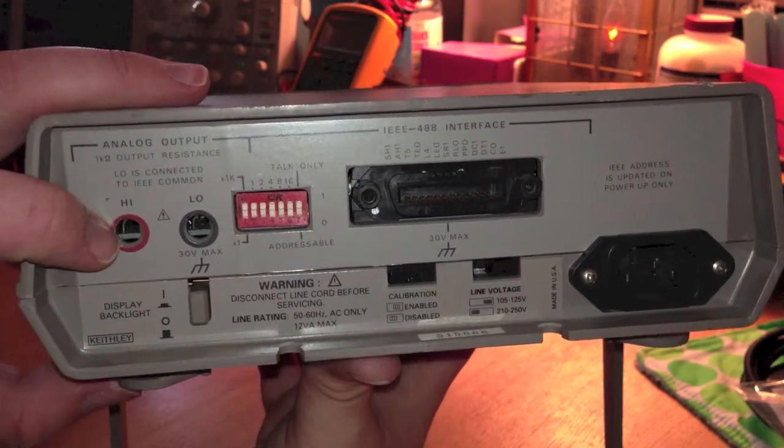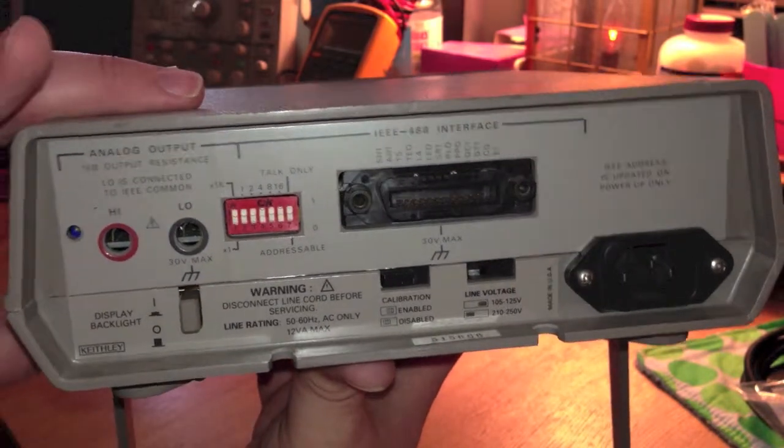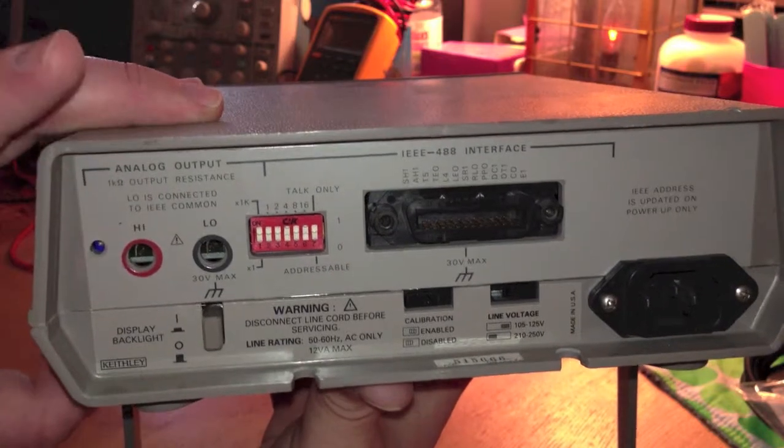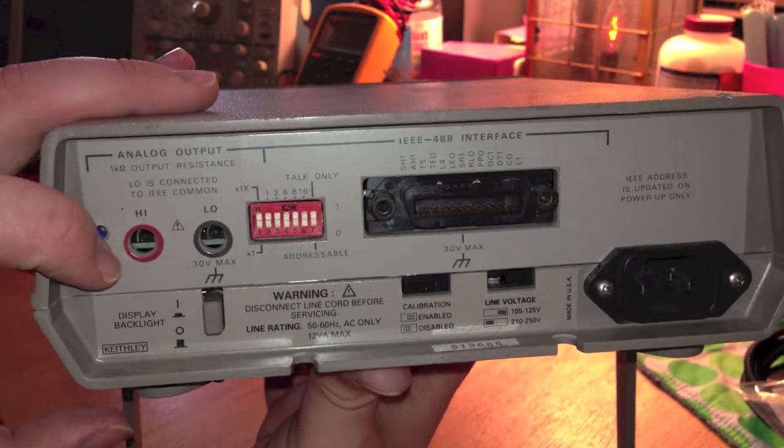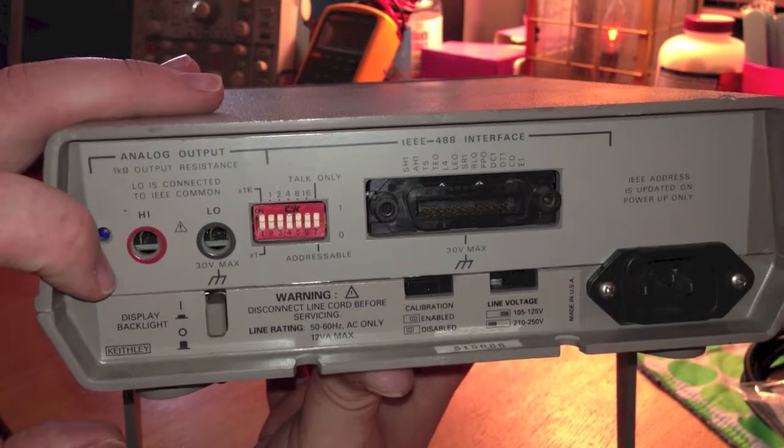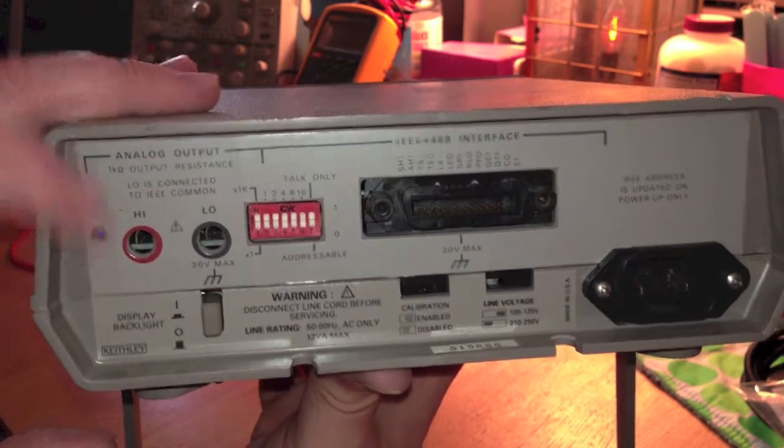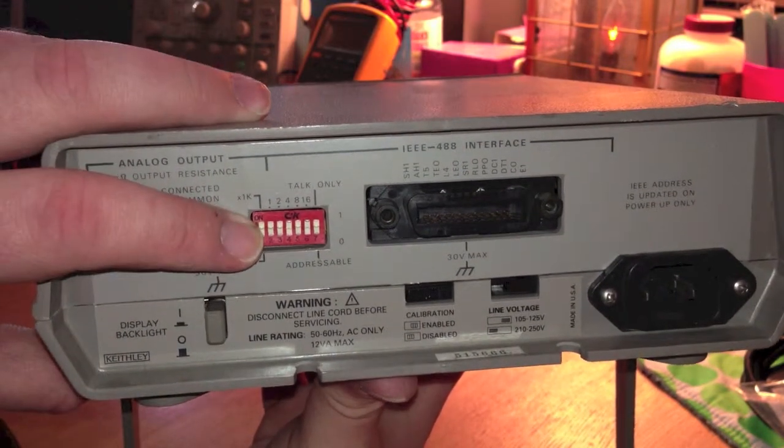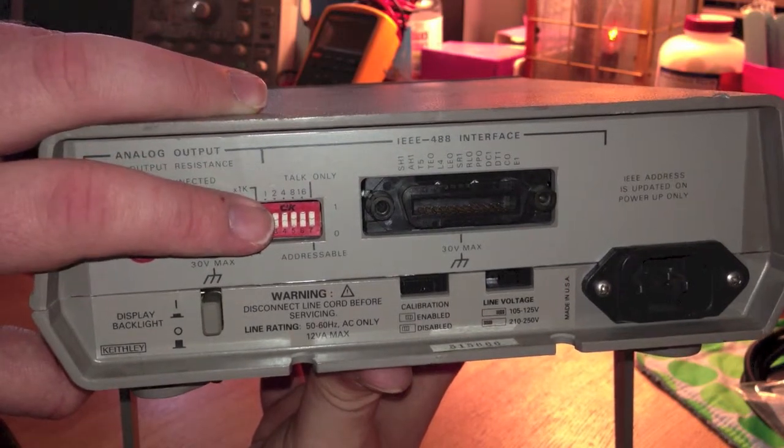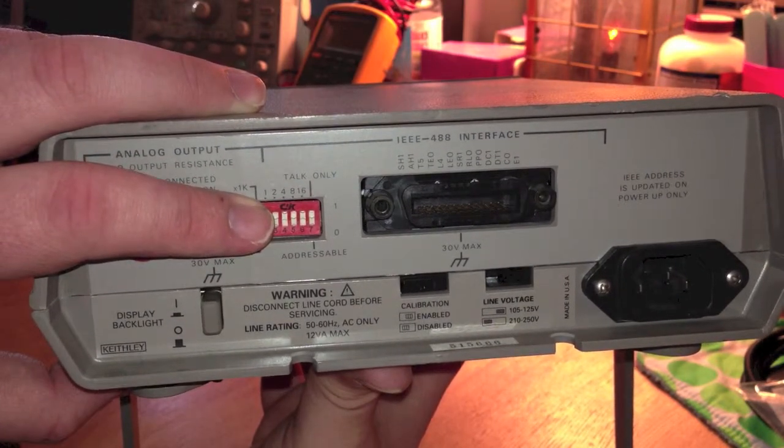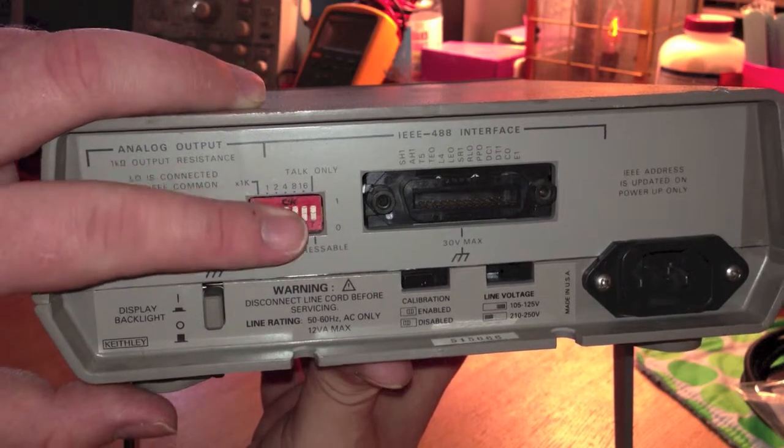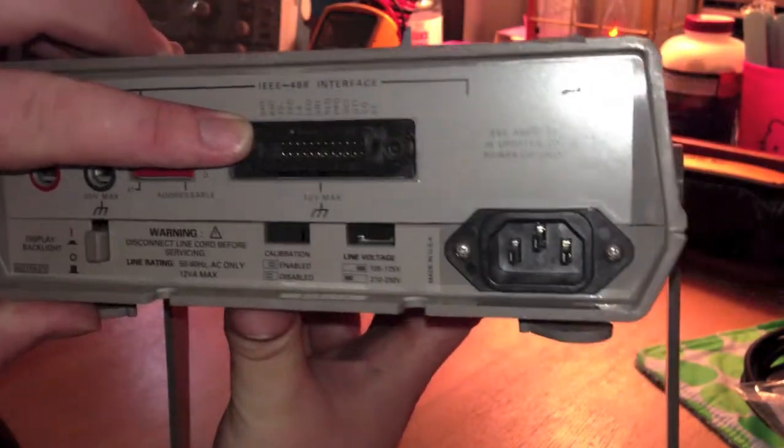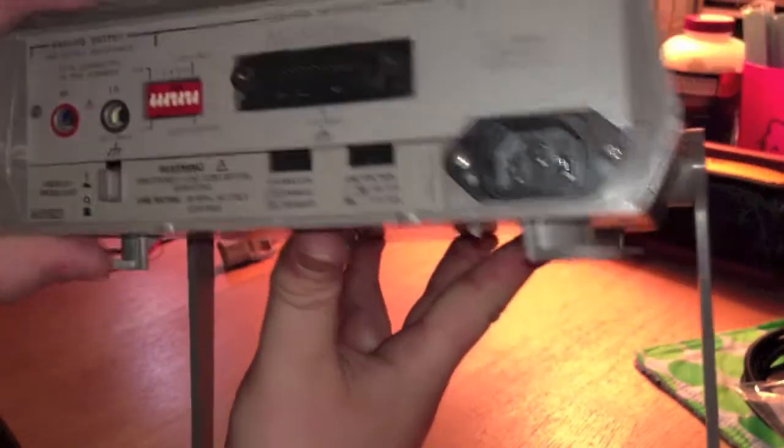These are analog outputs. I have not gone in depth with that in the manual, but I assume this is some sort of voltage output that scales with whatever input you're measuring. This is for your GPIB, or IEEE 488 interface, address selection, and that is the connector right there. Not much to it.